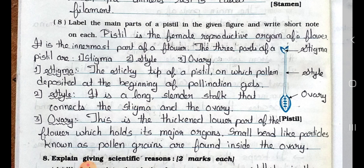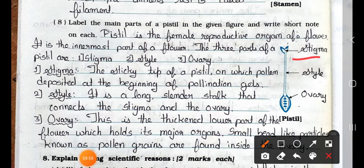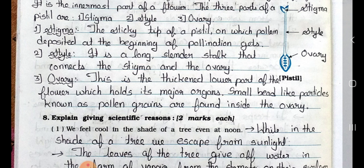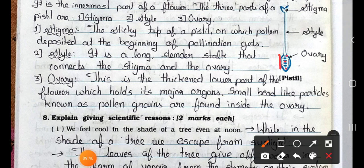Question 8: Label the main parts of a pistil in the given figure and write short notes on each. This one is the stigma, this one is the style, and this one is the ovary. Pistil is the female reproductive organ of a flower. It is the innermost part of a flower. The three parts of a pistil are stigma, style, and ovary. Stigma: the sticky tip of a pistil on which pollen is deposited at the beginning of pollination. Style: a long, slender stalk that connects the stigma and ovary. Ovary: the thick and lower part of the flower which holds its major organs. Small bead-like particles known as pollen grains are found inside the ovary.